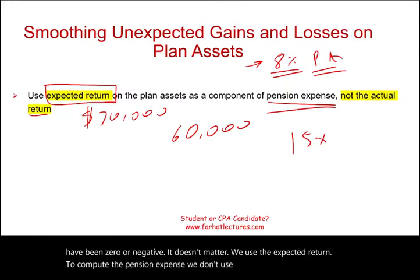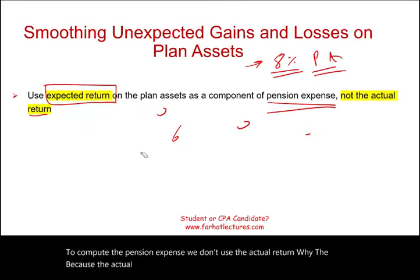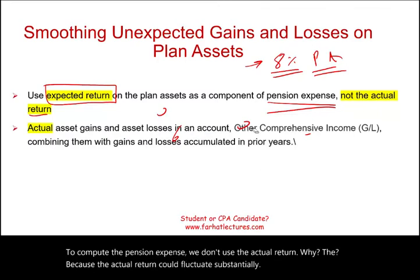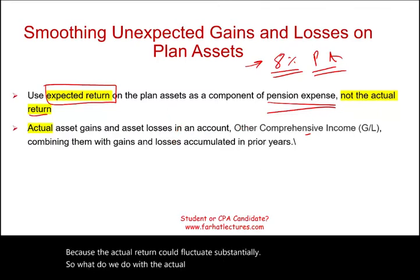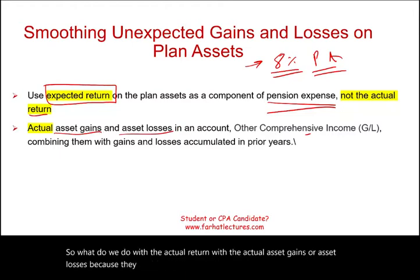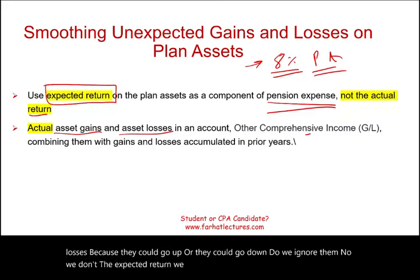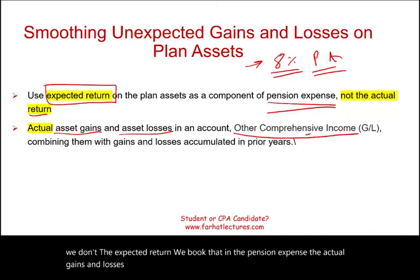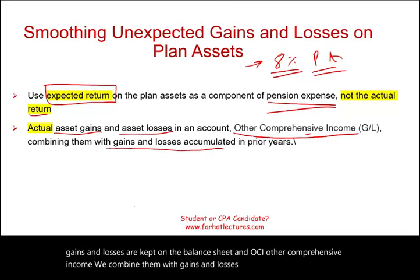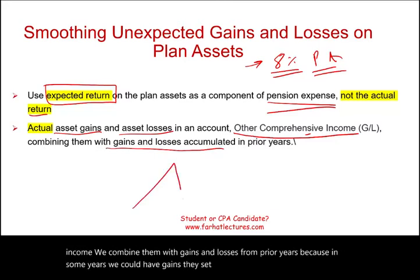We don't use the actual return because it could fluctuate substantially. So what do we do with the actual return — the actual asset gains or losses? We don't ignore them. The expected return is booked in pension expense. The actual gains and losses are kept on the balance sheet in OCI, other comprehensive income. We combine them with gains and losses from prior years because in some years we could have gains sitting in OCI, and another year we could have a loss.